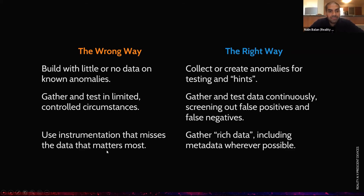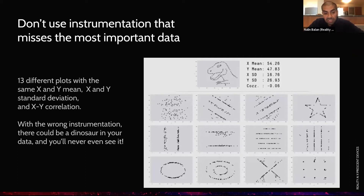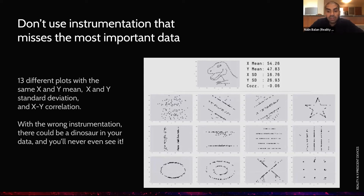As this excellent example from another domain shows, descriptive or aggregate stats often don't let you see the most interesting things. Here you have 13 different plots with the same X and Y mean, same X and Y standard deviation and X-Y correlation. But with the wrong instrumentation, there could be a dinosaur in your data and you'll never even see it. Without the ability to look at all of the source detail or the rich time waveform information, your algorithm would never see any of those patterns in your data.